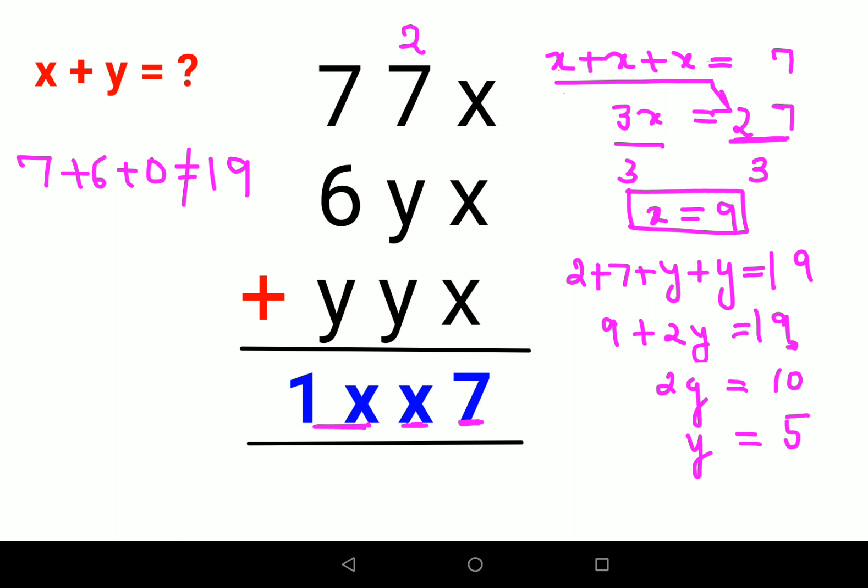If that is the scenario, we know the total is coming out to be 19. So this 9 will remain and 1 will get carried forward.